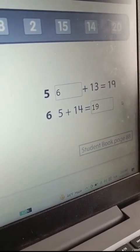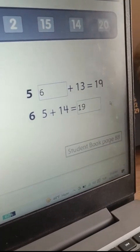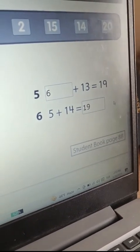Number five. Six plus thirteen equals ninety. Very good.